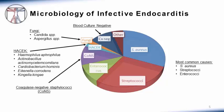Starting from the top of the chart, blood cultures are negative in a small proportion of cases, and this will be discussed in a separate module. Typical fungi that cause infective endocarditis include Candida and Aspergillus. HACEK is an acronym for five gram-negative microorganisms, including Haemophilus aphrophilus, Actinobacillus actinomycetemcomitans, Cardiobacterium hominis, Eikenella corrodens, and Kingella kingae.